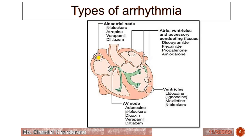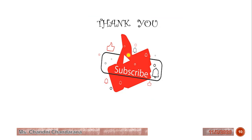According to the site of action, at the SA node we can give beta blockers, atropine, verapamil, and diltiazem. At the atria, ventricles, and accessory conducting tissues, various drugs can be administered. At the ventricle we can give lidocaine and beta blockers. At the AV node we can give beta blockers as well as adenosine. In the next video we will see the antiarrhythmic drugs in detail. Thank you dear learners for watching the video.